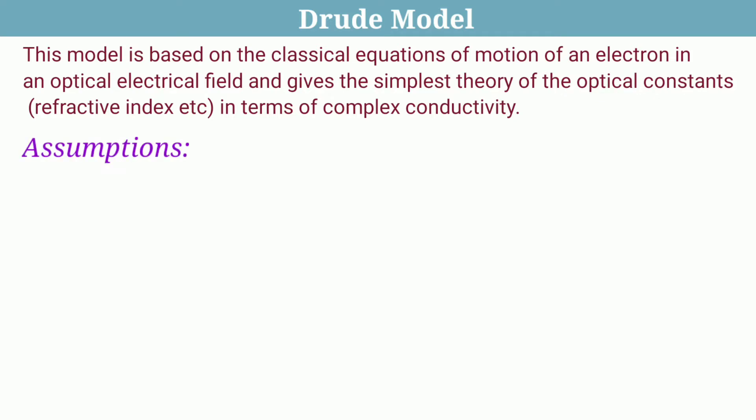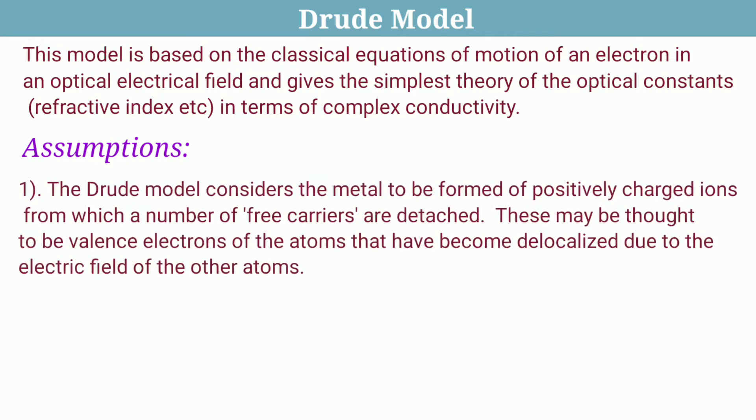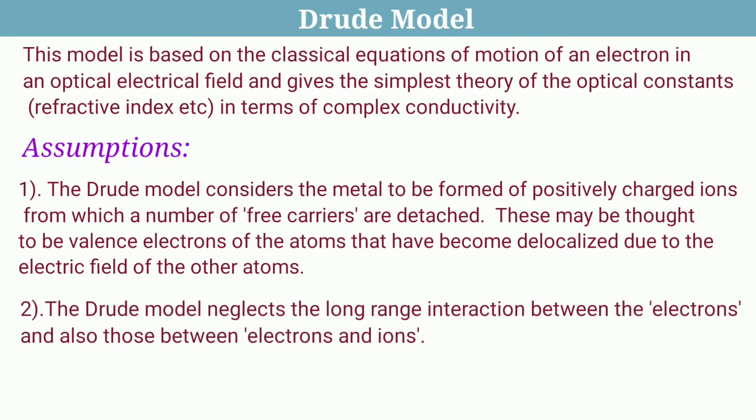The basic assumptions of Drude model are: the Drude model considers the metal to be formed of positively charged ions from which a number of free carriers are detached. The Drude model neglects the long range interaction between the electrons and also those between electrons and ions. The electrons move in a straight line between one collision and the other.